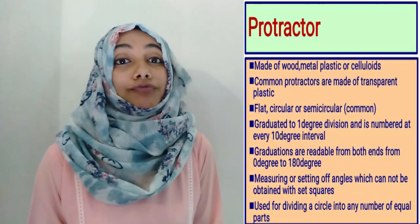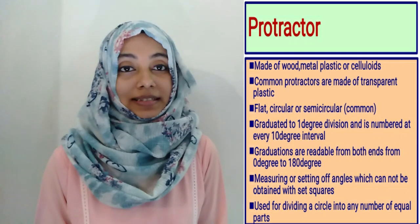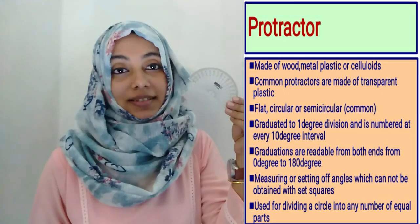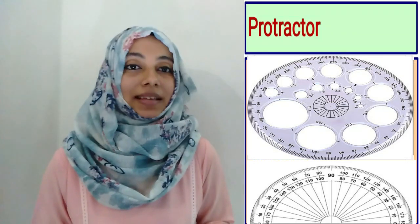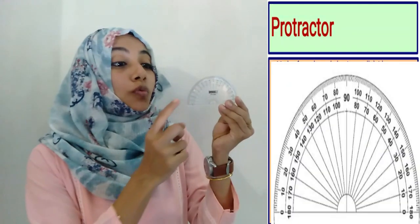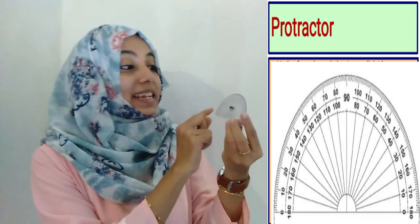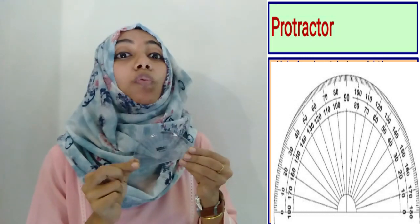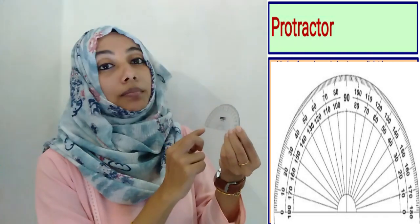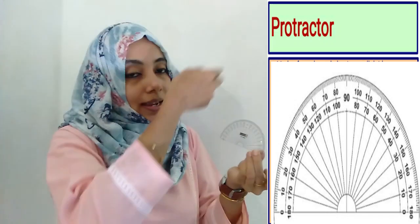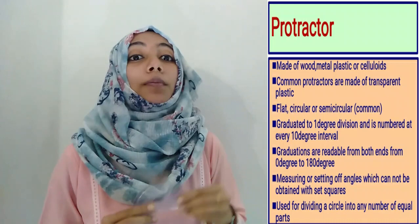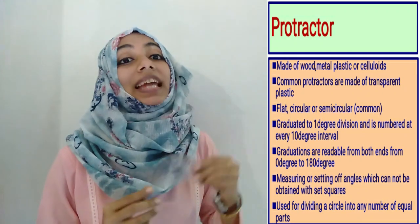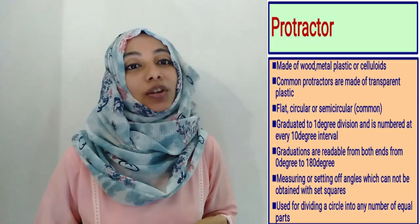Protractor. It is made of wood, metal, plastic, or celluloid, but most commonly used protractors are made of transparent plastic. These are flat, circular, or semicircular — here it is semicircular. Graduated to one degree divisions and numbered at each 10 degrees — 0°, 10°, 20°, 30°, and so on up to 180°. Graduations are readable from both ends. Protractors are used for measuring or setting angles which cannot be done with set squares. Using a protractor, we can divide a circle into any number of equal parts.